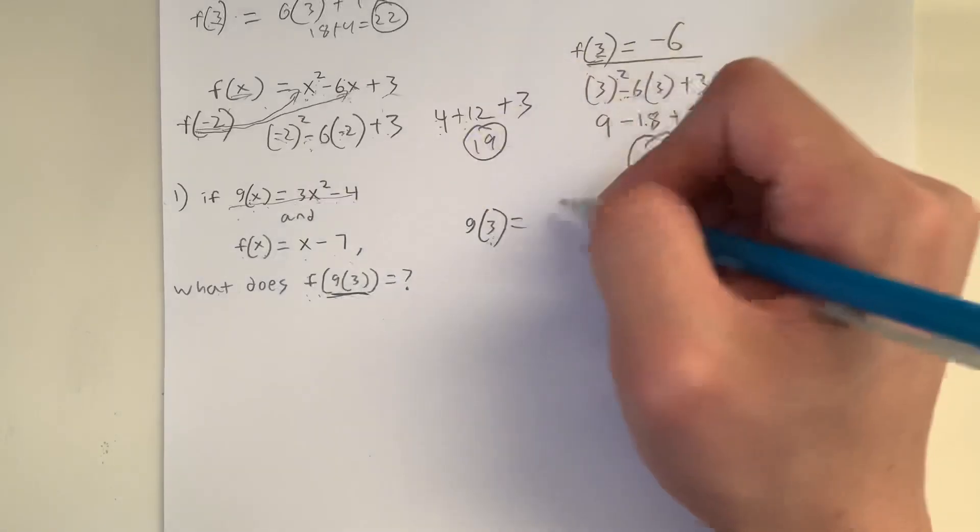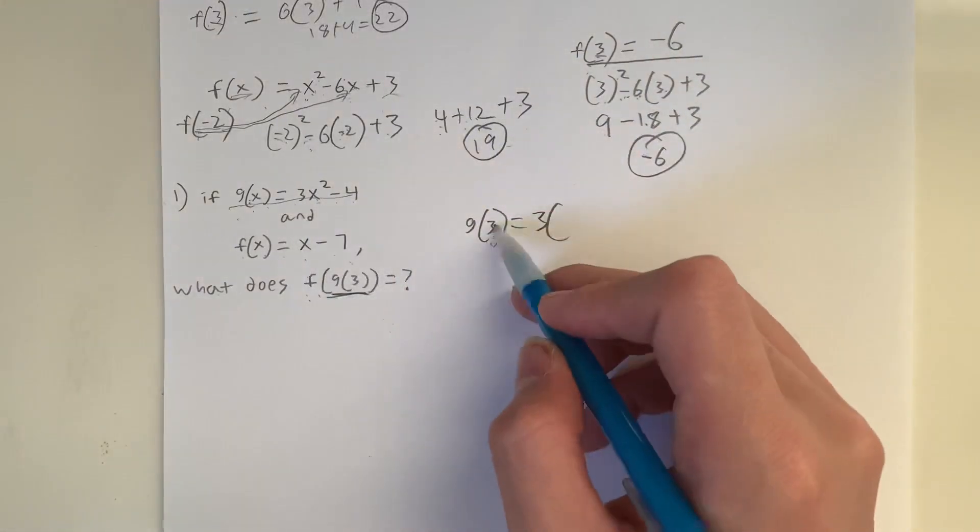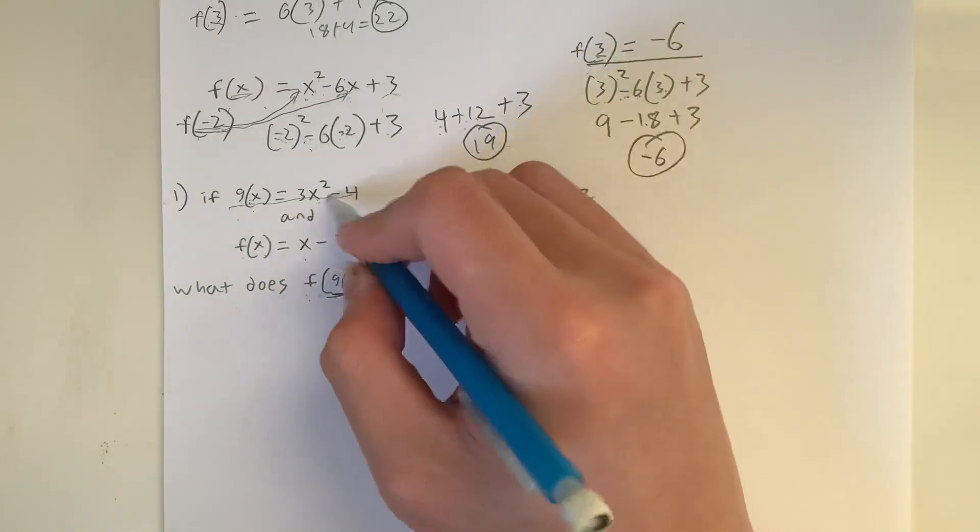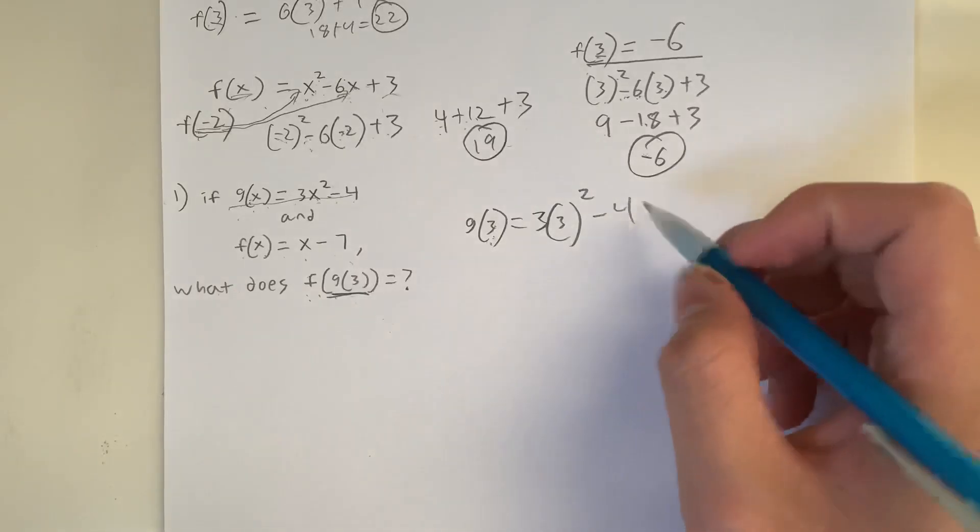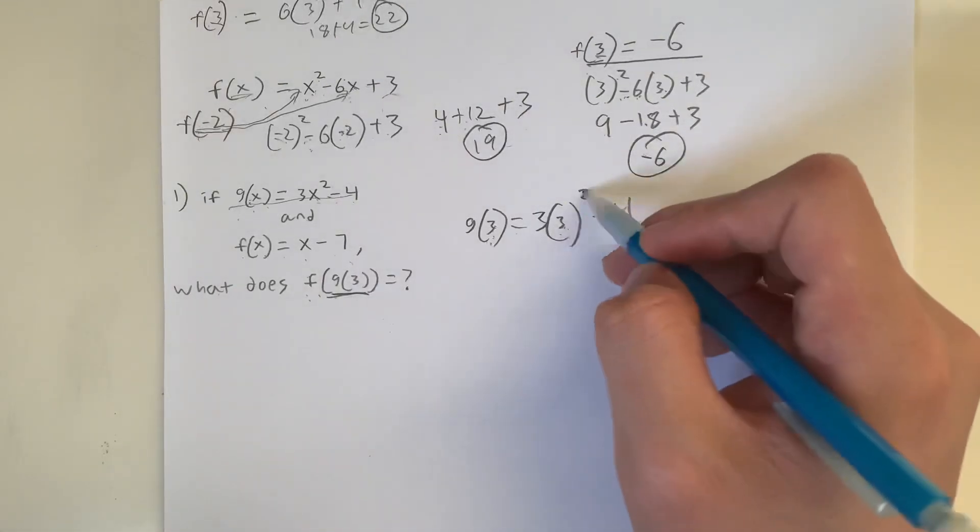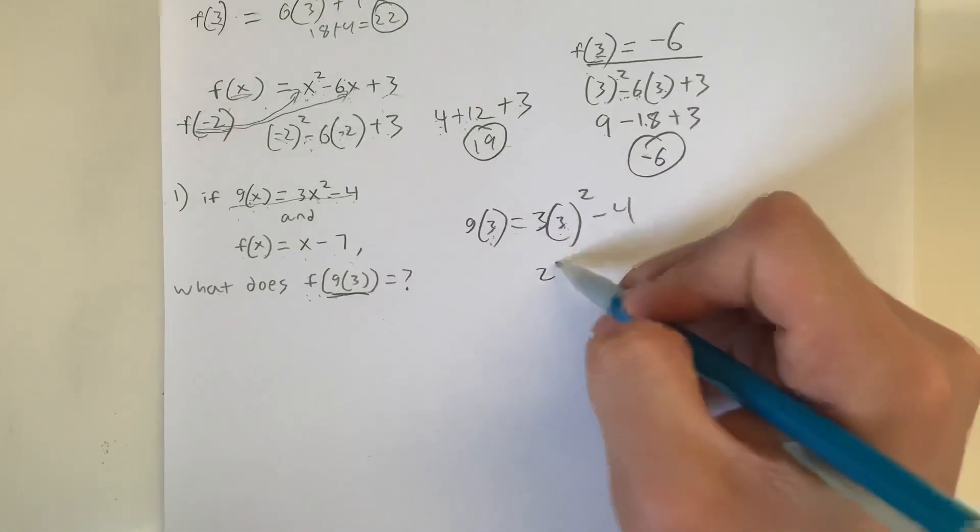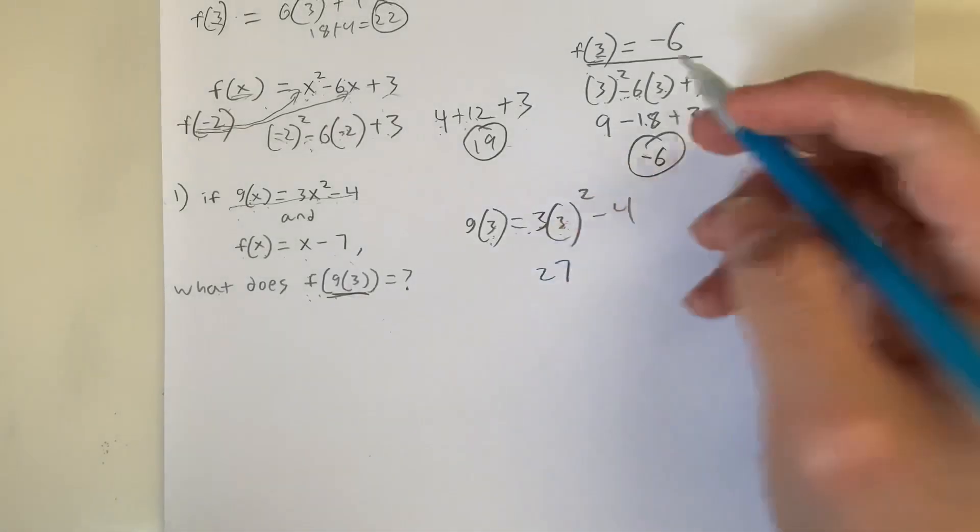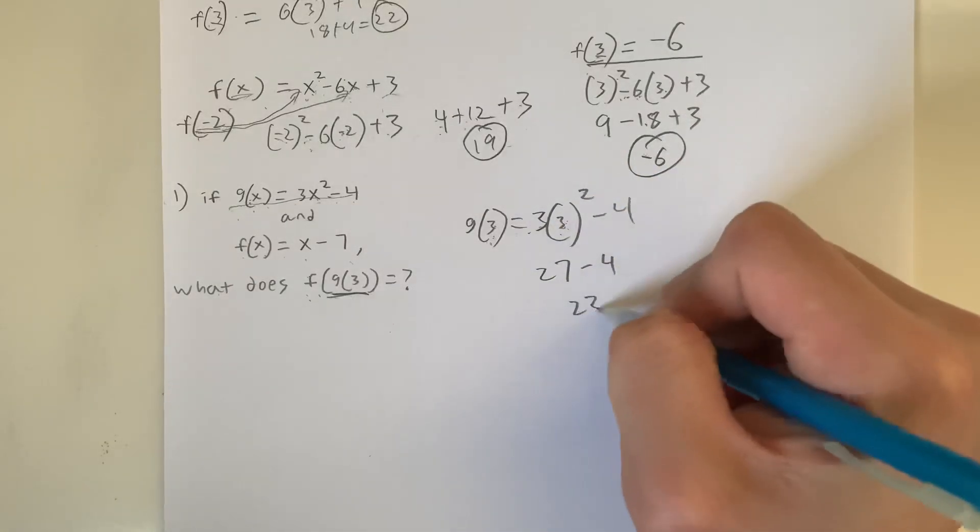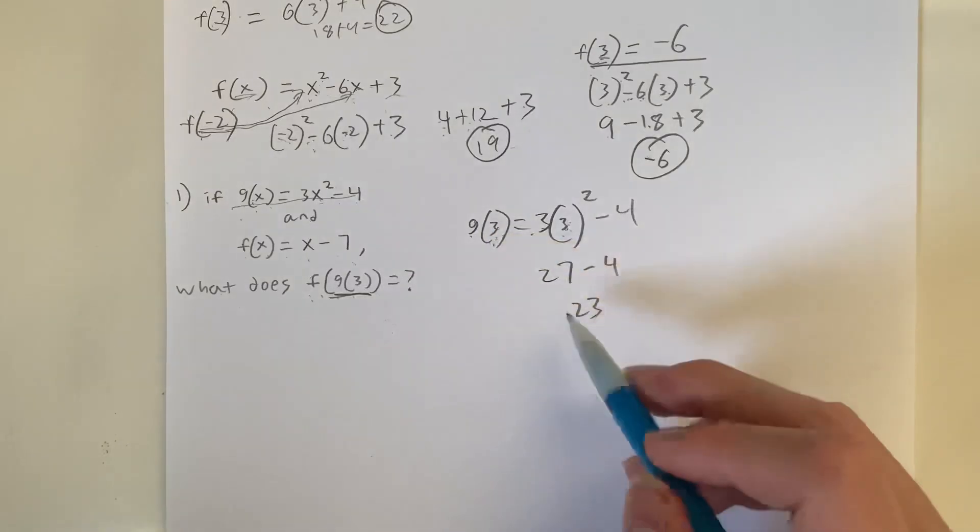So g(3) is equal to 3 times, plug in x, 3 squared minus 4. Keep the numbers. Substitute x. 3 squared is 9. 9 times 3 is 27. Always do exponents before multiplying. 27 minus 4 is 23. So the value of g(3) is 23.